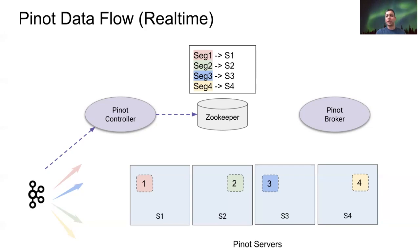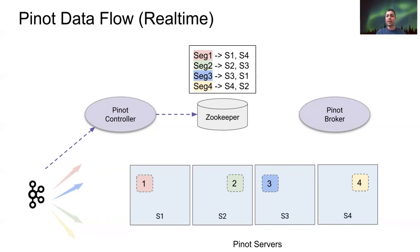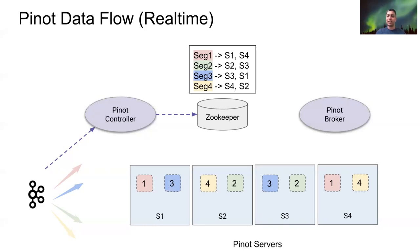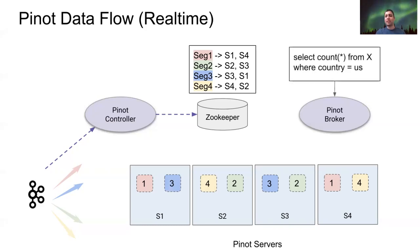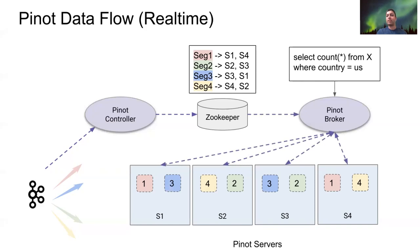With any good distributed system, we want to make sure our data is replicated. So let's configure our table with a replication factor of two. The controller will read this config and make sure that every single segment is replicated on two distinct servers. At this point, data is flowing from Kafka to all these servers in parallel. When the Pinot broker receives a query, it will do a distributed scatter-gather and contact all the servers responsible for this table, passing the query to each such server. Each server will then locally execute the query for the corresponding segments and return an intermediate response to the broker.